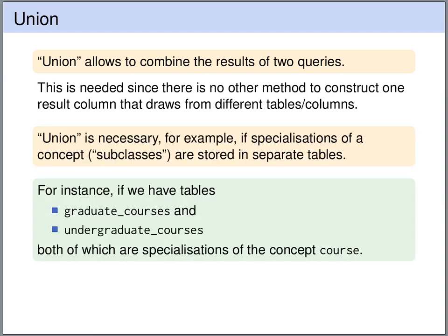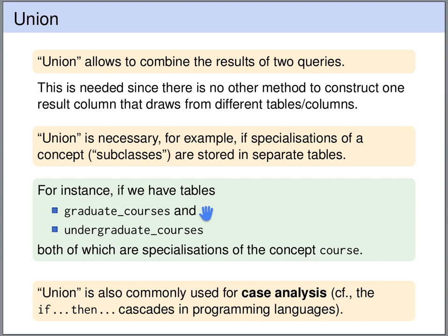For instance, we need a union if we have two specializations of some concept that are stored in different tables. For example, we have a concept 'course' with specializations: undergraduate courses and graduate courses. If undergraduate and graduate courses are stored in different tables but we want a query that combines them into one column drawing from both tables, then we need the union operation. Also, the union operation is often used for a kind of case analysis — if-then-else.